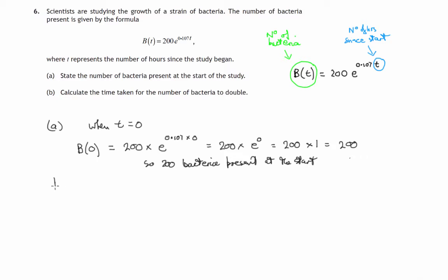Part B says calculate the time taken for the number of bacteria to double. So we need to find t so that we now have 400 bacteria. The number of bacteria, that's green here, has to be 400. So we've defined t so that the number of bacteria is 400.